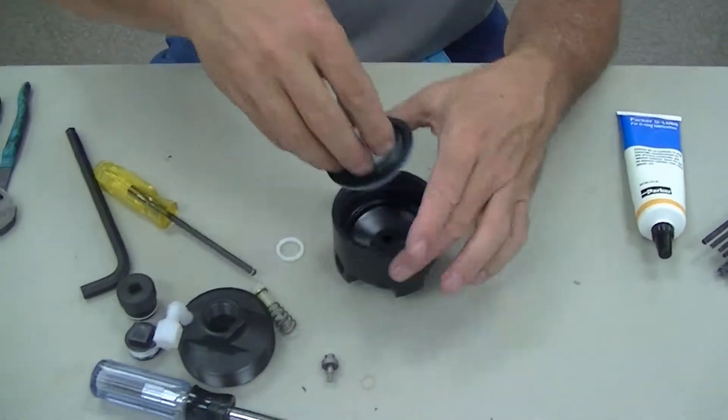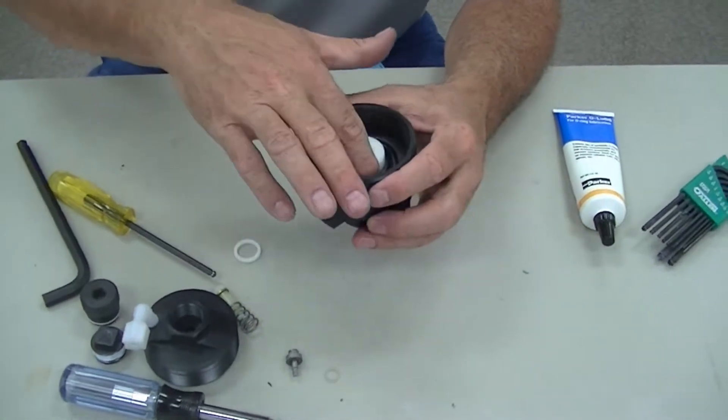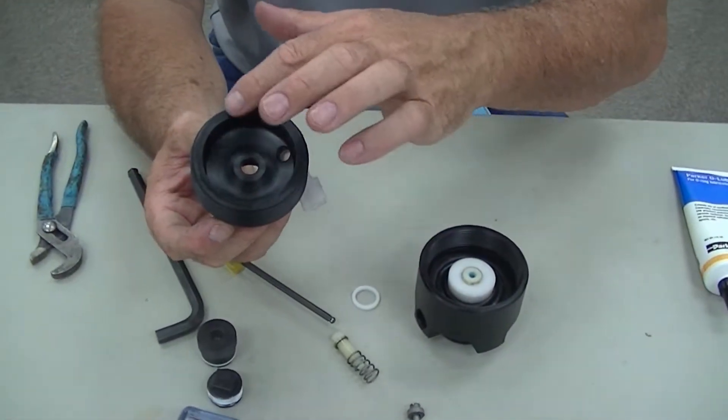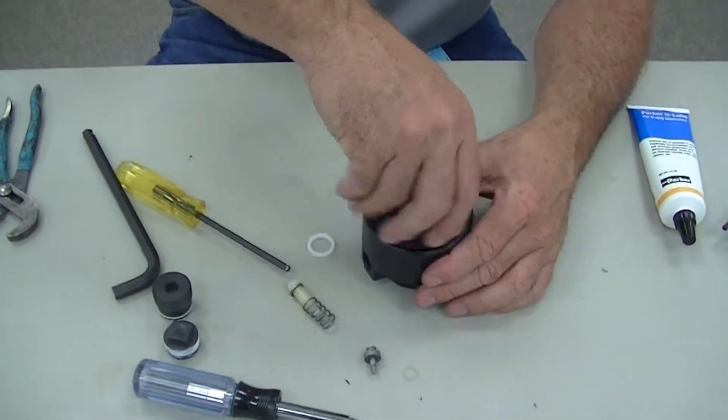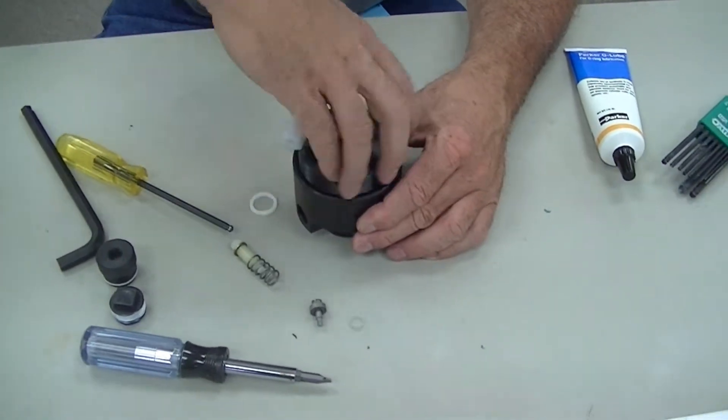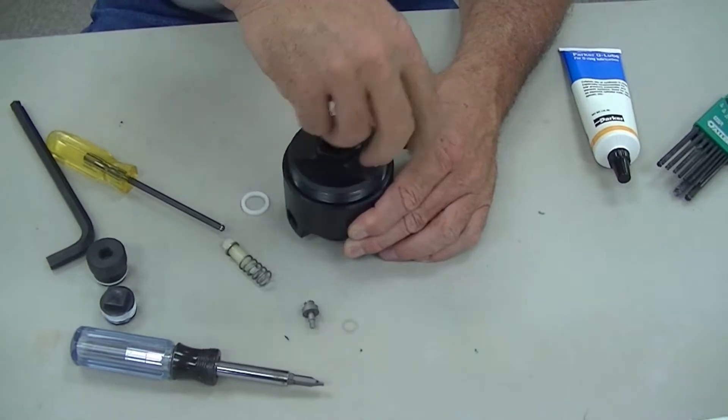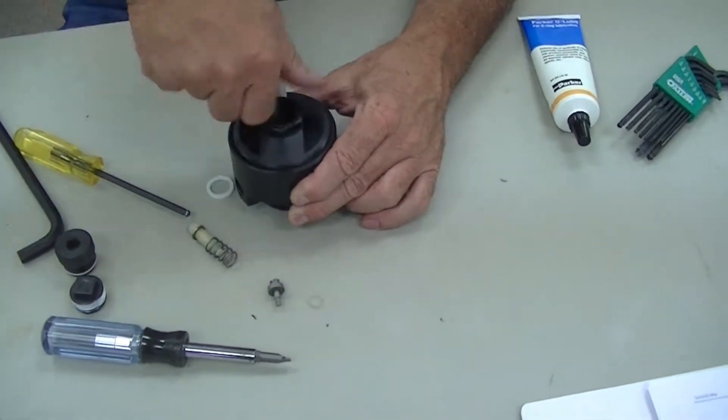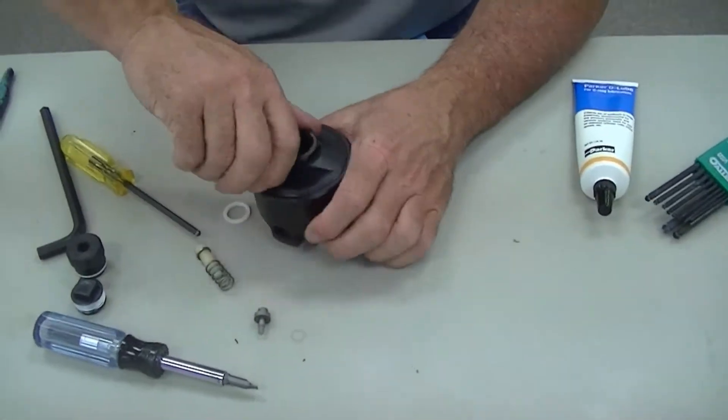So again, assemble, O-ring lube on that edge, you can even put a little O-ring lube on this flat here. Go ahead, tighten it back up. Get it up there so it bottoms out. Now I know I've hit that edge of the diaphragm.